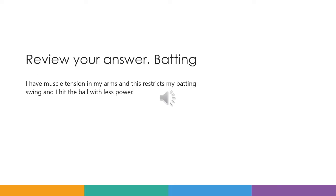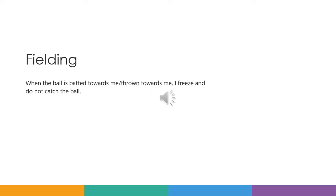Now it's time to review your answer. In batting, you could have said something along the lines of... Now go on and try — you're going to check and change your fielding answer, but don't move to the next slide until you've finished your fielding answer. So for fielding, you could have said something along the lines of: when the ball is batted towards me or thrown towards me, I freeze and I don't catch the ball.